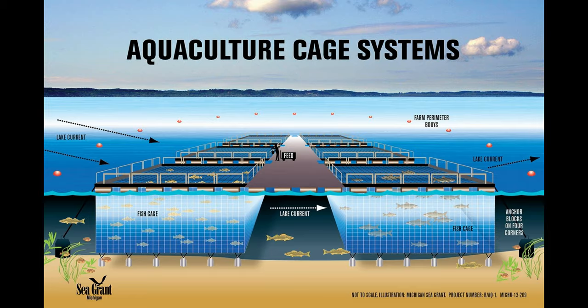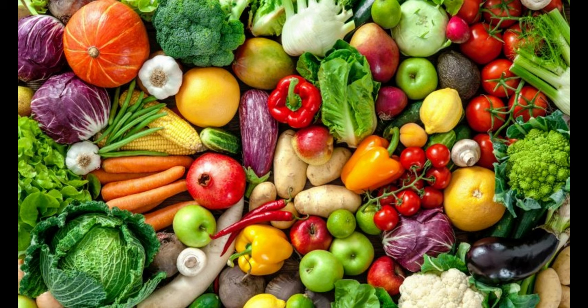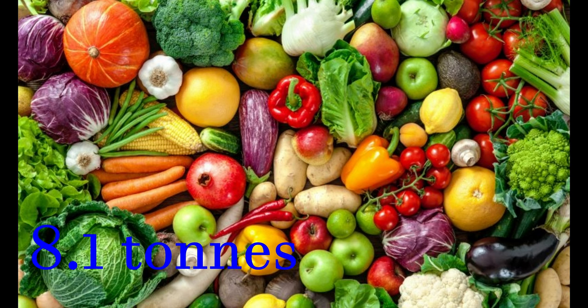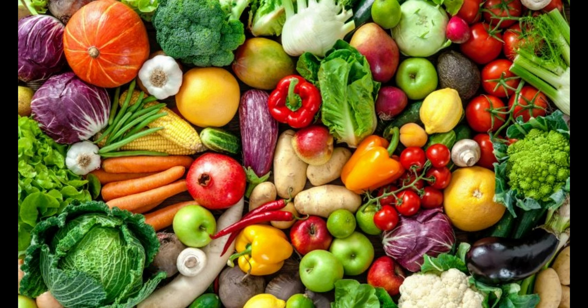One smart floating farm can produce 100,000 vegetables and 1.2 million fish.